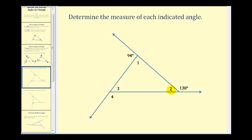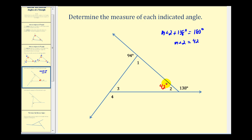Looking at angle two, we know the measure of angle two plus 138 degrees must equal 180 degrees because they form a linear pair. So if we subtract 138 from both sides, the measure of angle two must be 42 degrees. Similarly, the measure of angle one plus 94 degrees must equal 180 degrees. Subtracting 94 from both sides, the measure of angle one will be 86 degrees.